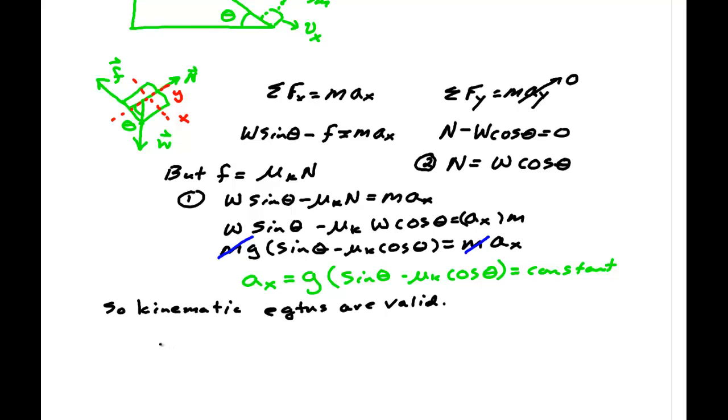This means that v x squared is v x naught squared plus 2 times acceleration in x which is g sine theta minus mu k cos theta times x minus x naught.